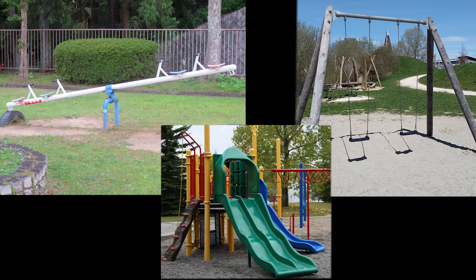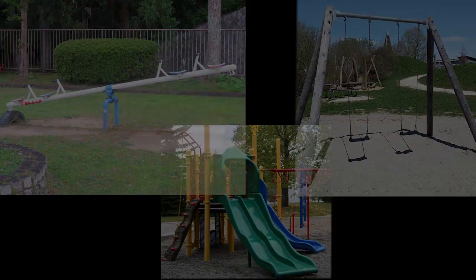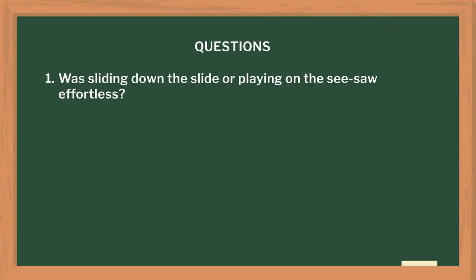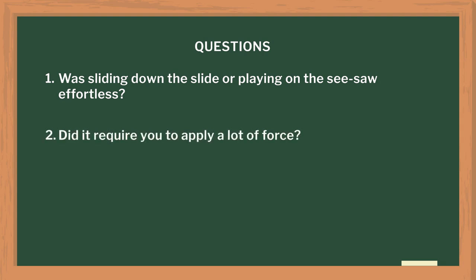It is always good to introduce the topic with an activity. What we can do is show some photographs of gardens or a playground where a slide or a seesaw is available. Was sliding down the slide or playing on the seesaw effortless? Did it require you to apply a lot of force? Why is that so? This activity will probably encourage them to think about and notice different machines around them. More elaborate discussions and activities will help them understand this topic even better.